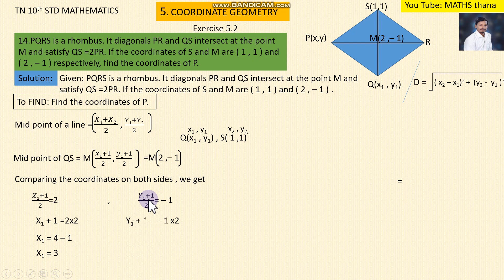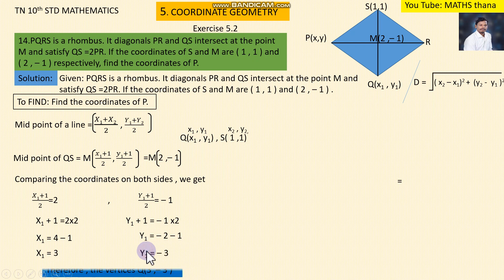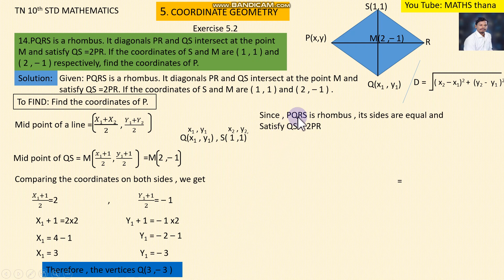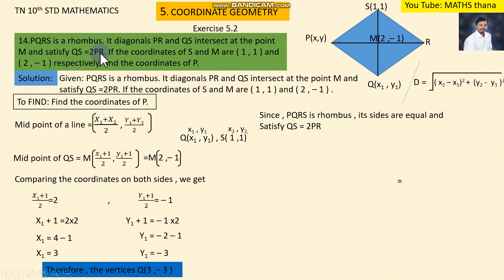Similarly, (y1 + 1) divided by 2 is equal to 1. Solving: y1 + 1 = 2, so y1 = 1. Since PQRS is a rhombus, all sides are equal. Also, QS = 2PR is given.